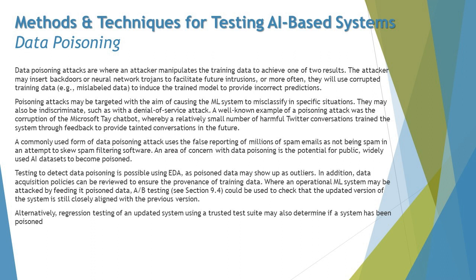An AI-based system is vulnerable because it doesn't decide on its own — it operates entirely based on the inputs and data it was trained on. If you train a model with bad data, it presents bad results; if trained with correct data, it gives correct results. The only protection is ensuring there is no possible way to poison the data that the system learns from.